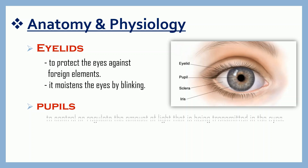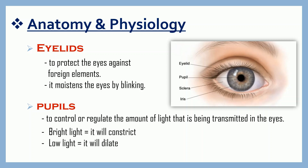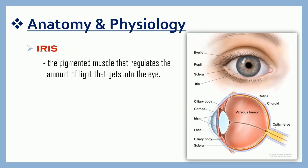Next, the pupil. Its function is to control or regulate the amount of light that is being transmitted in the eyes. The pupil will constrict when there is bright light, while the pupil will dilate in low-light situations. Then we have the iris. It is the pigmented muscle that regulates the amount of light that gets into the eye. The iris uses muscle to change the size of the pupil, controlling the amount of light entering the eye by making the pupil larger or smaller.